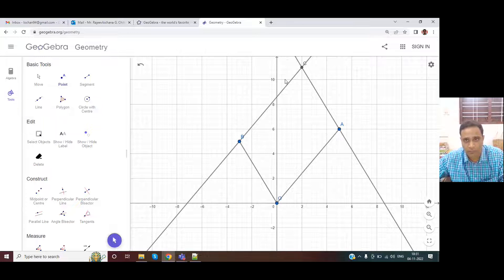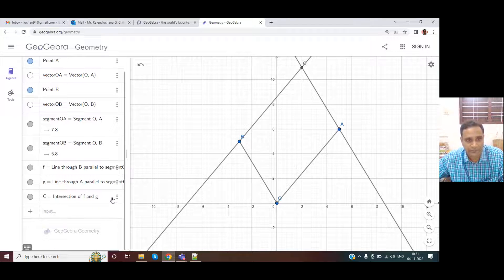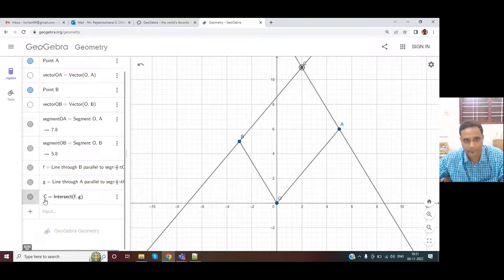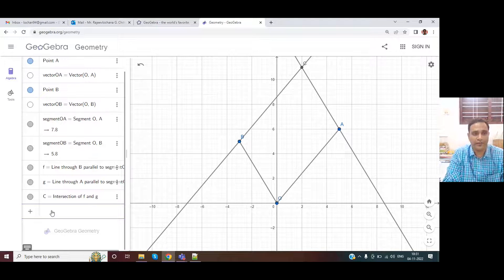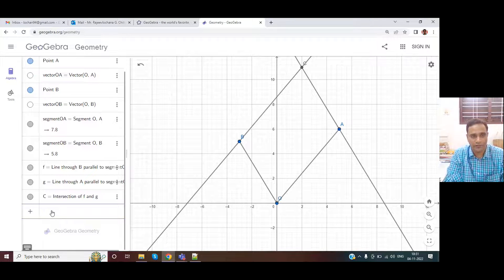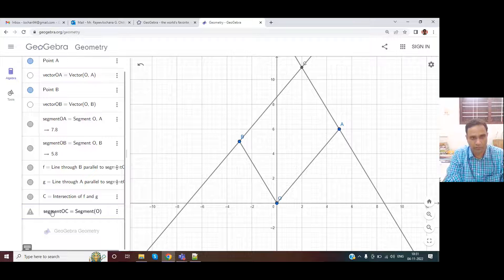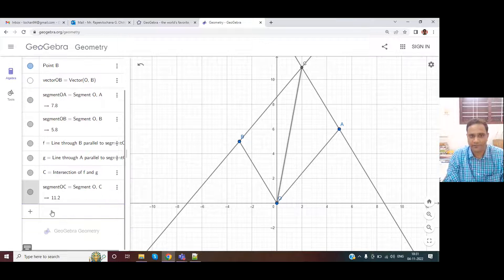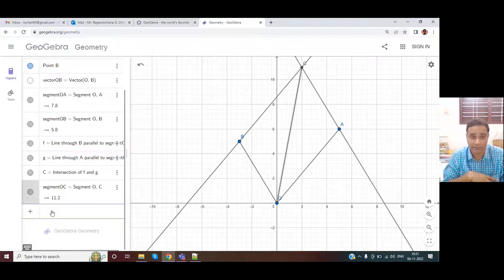Now point C has been captured here. So we can have segment C as segment between O and C. So that is the resultant vector, the diagonal of the parallelogram.